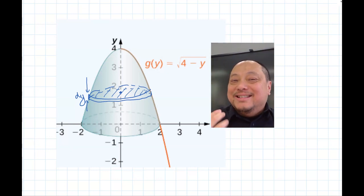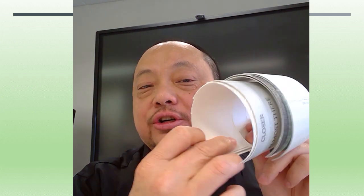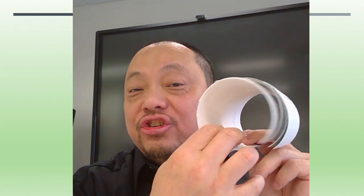The Shell Method doesn't slice the solid but instead carves it into concentric circular shells. Imagine that you want to take the volume of a cylindrical tube something like this. You can carve concentric circles out of it. Each is a shell. The total volume of the whole tube is the sum of all the volumes of the shells.